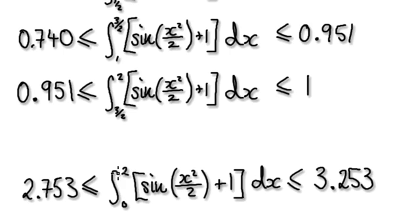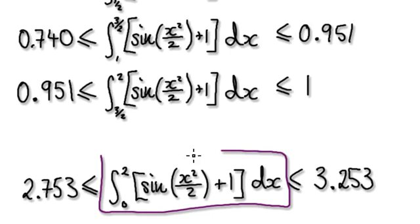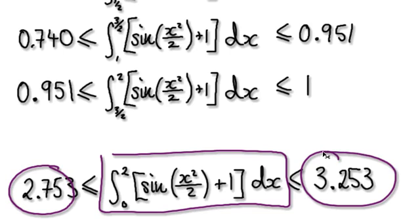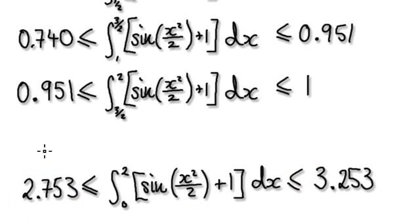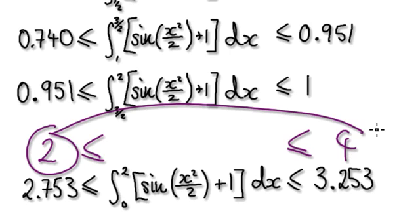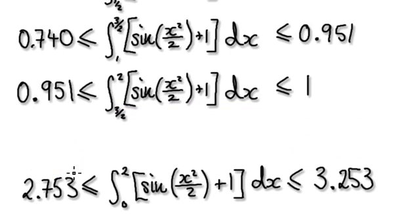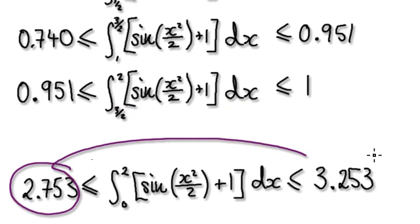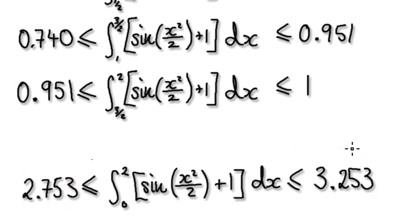Now the true area would be somewhere in between here and here. You see, this is more accurate. In the previous video it was between two and four — two and four is quite a big gap. We've now narrowed it down, so now it's getting more and more accurate. Rather than splitting into four parts, if you split it into a million parts, then it would give you a better answer.